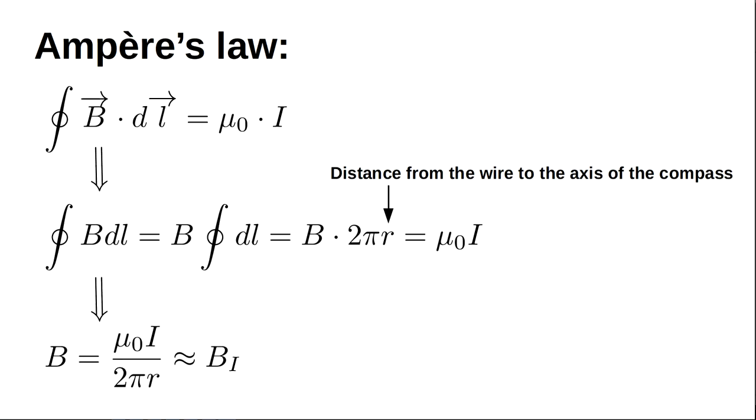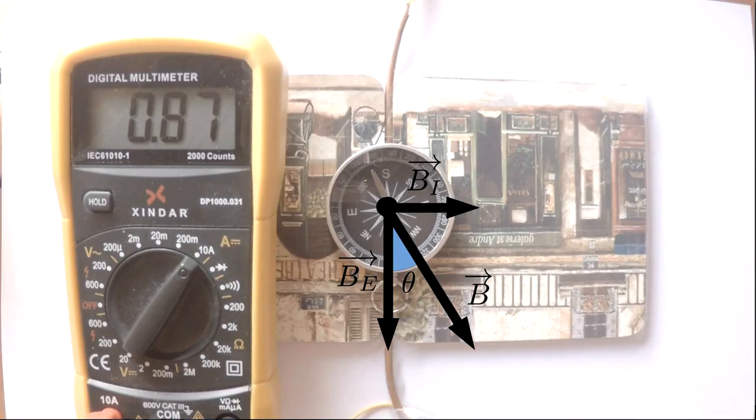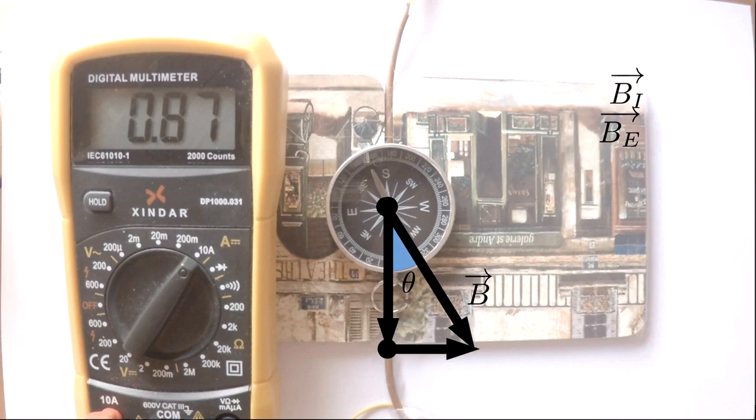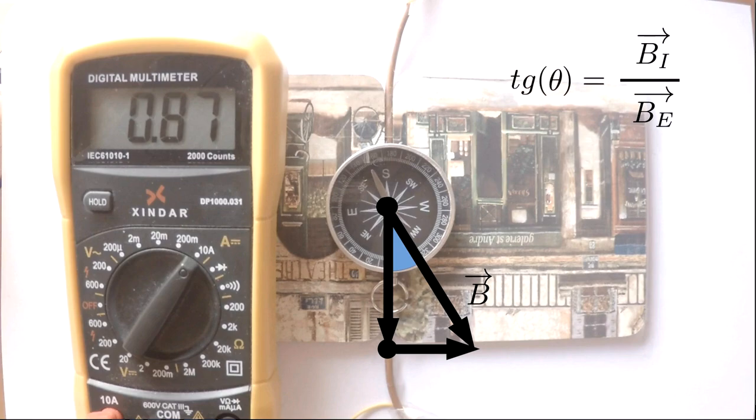We measure the angle described by the compass needle. Then, from trigonometry, we can say that the tangent of the angle is the following one. Finally, we solve for the magnitude of the magnetic field of Earth.